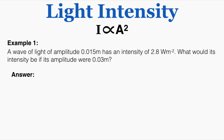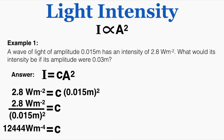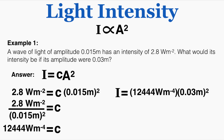In example one, a wave of light with amplitude 0.015 meters has an intensity of 2.8 watts per meter squared. What would its intensity be if its amplitude were 0.03 meters? Using I = C·A², I plug in the original values to solve for the constant C, which equals 12,444 watts per meter to the negative fourth. Then plugging in the new amplitude of 0.03 meters gives a new intensity of 11.2 watts per meter squared.